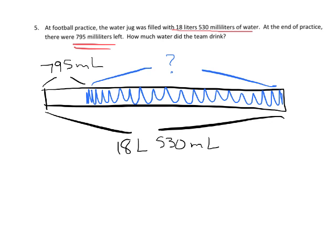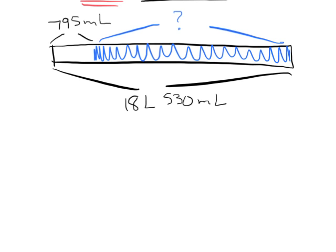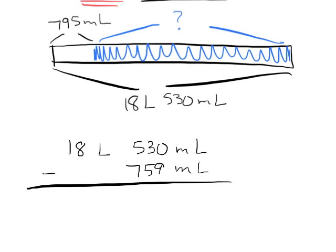The question is how much water did the team drink, so we're going to subtract. Let's do it in an algorithm-like way: we have 18 liters 530 milliliters and we're going to subtract 795 milliliters. We can't do 530 milliliters minus 795 milliliters because that would go into negatives, and this isn't a negatives kind of question. So we're going to regroup — take one of these liters — leaving us 17 liters.